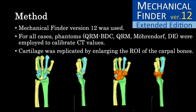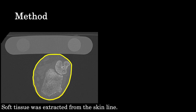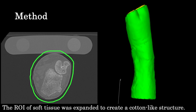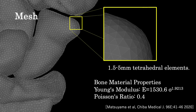For the method, Mechanical Finder version 12 was used. For all cases, phantoms were employed to calibrate CT values. Cartilage was replicated by enlarging the ROI of the carpal bones. A fracture model was created assuming a Colles' fracture. Two 1mm thick plates were placed in a wedge shape on the radius, simulating the fracture site with the palmar side in contact. Soft tissue ROI was obtained from the actual image and extracted from the skin line, then expanded to create a cotton-like structure. The ROI was further expanded to represent a cast. The mesh was set at tetrahedral elements of 1.5 to 5mm.